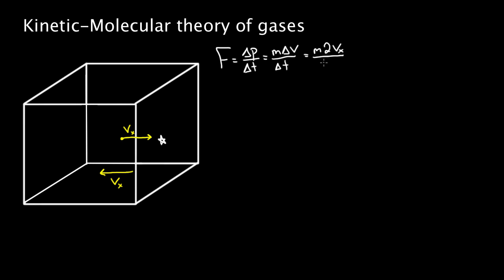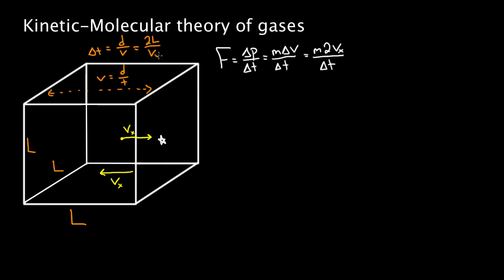So the force is m times 2vx over delta t, but I need to eliminate delta t. The box has side length l, so delta t — the time between collisions with this wall — is the time to travel to the opposite wall and back: delta t equals 2l over vx. The particle travels to the left wall, bounces back, and hits this wall again.